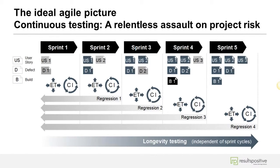Relentless is synonymous with continuous — you're constantly assaulting project risk at every corner through quality assurance principles, continuous automated regression testing, and continuous integration testing. But in order to do that, you need to have the pieces of the puzzle tied together from a people, process, and technology perspective.